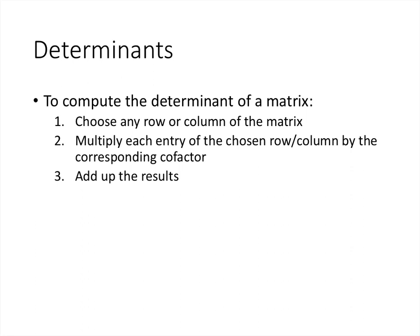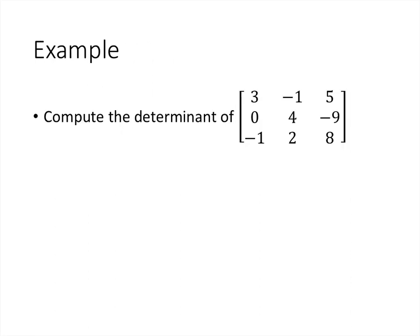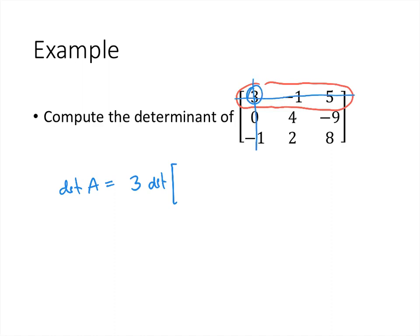Now we're ready to talk about how to find the determinant of a larger matrix. We choose any row or any column — we'll talk about how to make a good choice shortly. Once we've chosen that row or column, we multiply each entry by the corresponding cofactor and add up the results. For this first example, let's choose the first row. The determinant of matrix A is going to be the first entry of that row, which is 3, multiplied by the determinant of the matrix we get by scratching out the first row and first column.